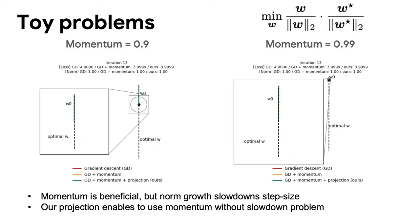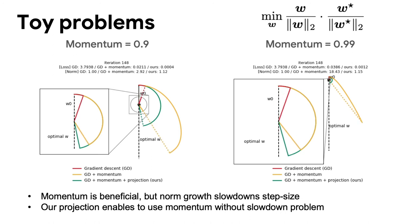Here is a scale invariant example to show the effect of our optimizer. Momentum is an essential part of the optimizer. However, as shown in the yellow line, it continuously increases the norm and slowdown effective step size. On the other hand, as shown in the green line, our method removes the slowdown due to norm increase, and achieve the best result.